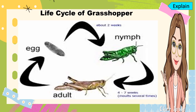Here we have the life cycle of the grasshopper. The first stage is the egg. Then, after about two weeks, it becomes a nymph. And lastly, four to seven weeks later, it will turn into an adult grasshopper.